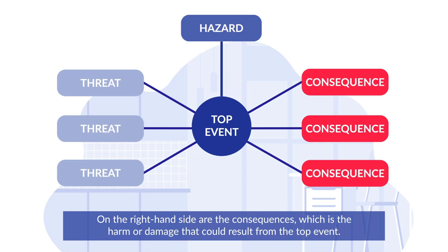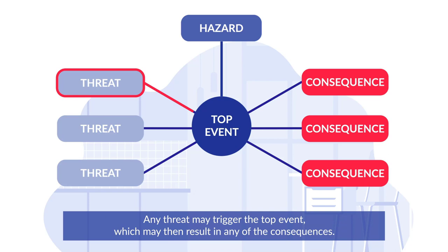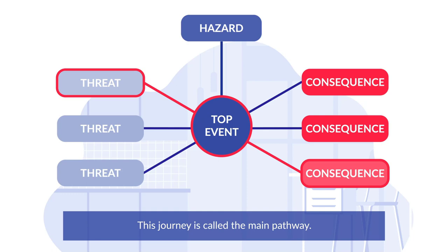On the right-hand side are the consequences, which is the harm or damage that could result from the top event. Any threat may trigger the top event, which may then result in any of the consequences. This journey is called the main pathway.